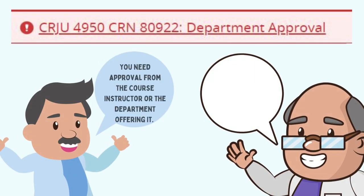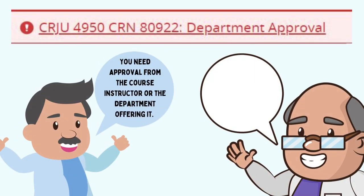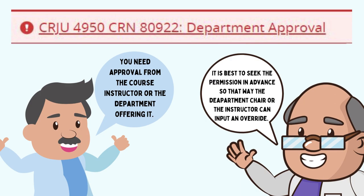This error means that you need approval from the course instructor or the department offering it. It is best to seek this permission in advance so that the department chair or the instructor can input an override and prevent you from receiving this error message on registration day.